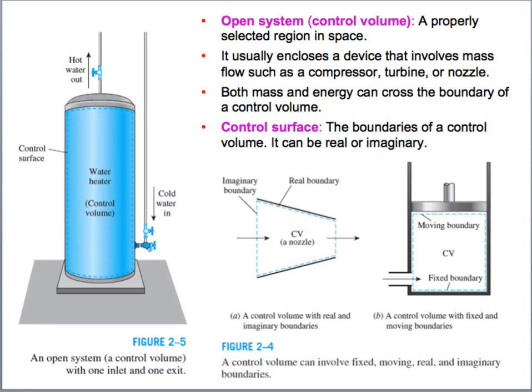And again that control surface can be anything we want it to be. Here you see a nozzle example. You see a piston having flow come into it and the boundary is moving. So it can be anything we want it to be and we'll do several problems using these analysis.